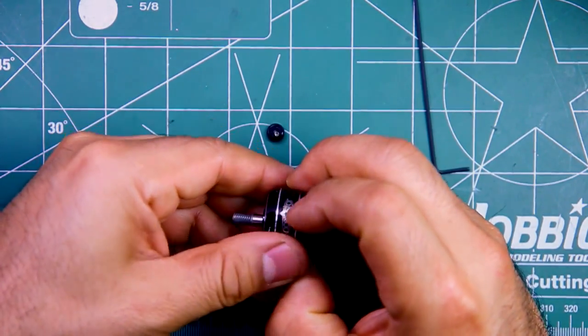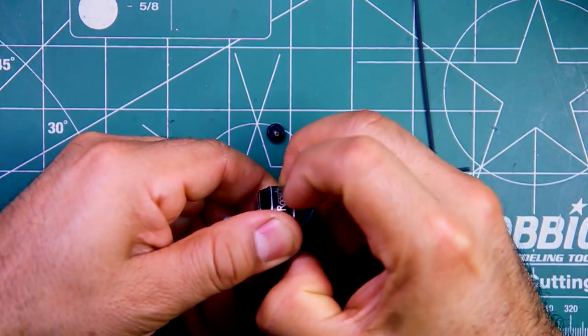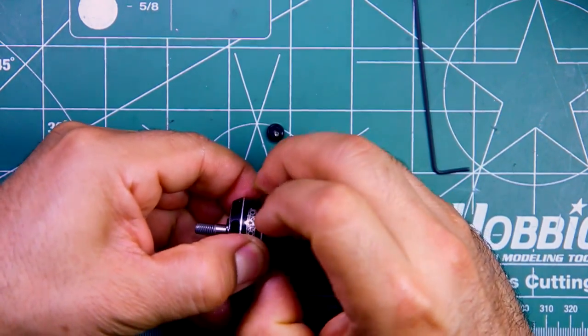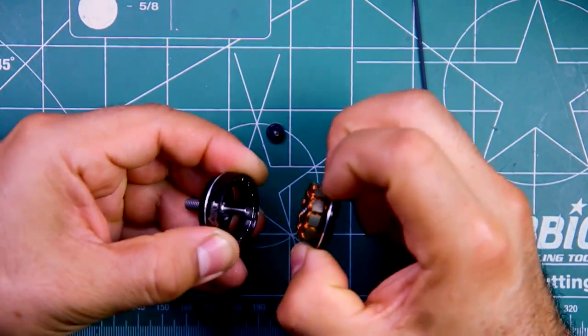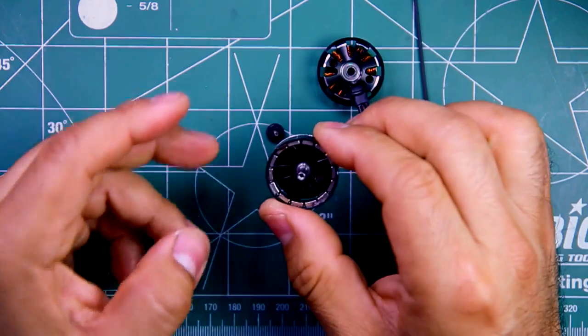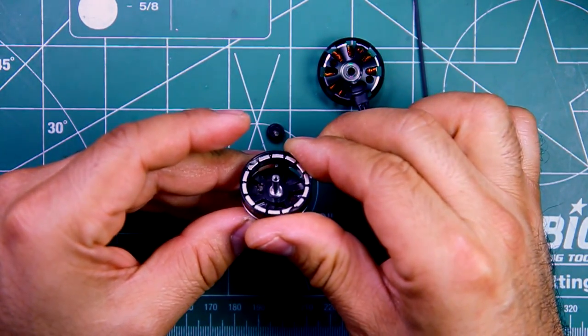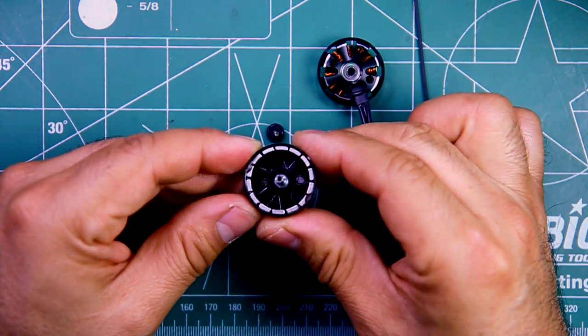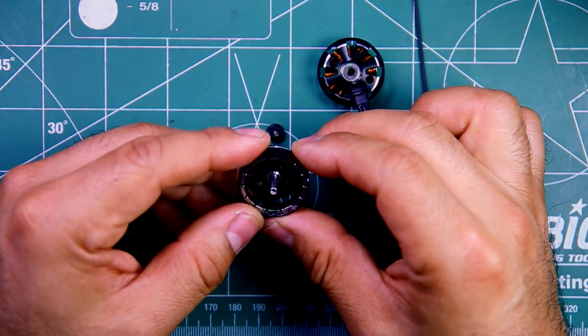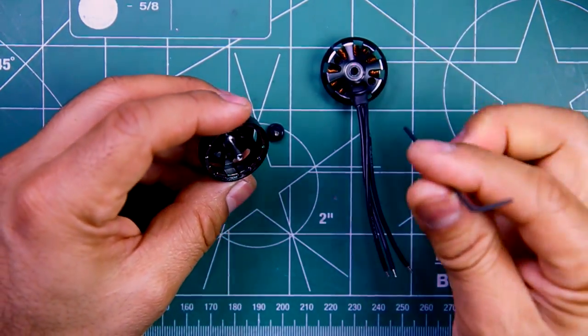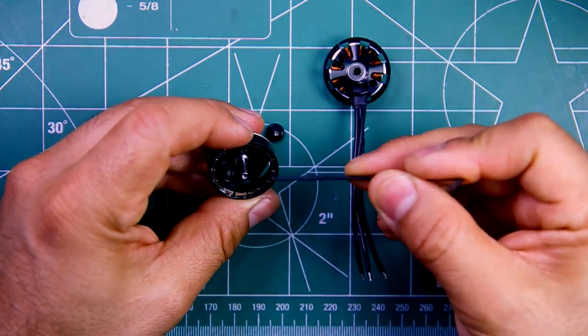One thing I didn't notice on the Banggood page, the picture they have for the magnets is a little bit different. As you can see there, they are curved magnets, but I think on the Banggood page they're using just block magnets. So that's kind of nice, they're using curved magnets.